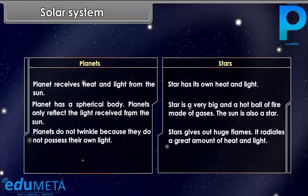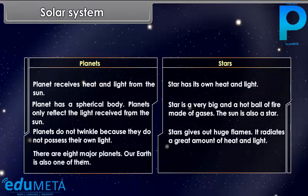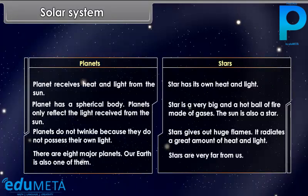Stars give out huge flames and radiate a great amount of heat and light. A star is a very big and hot ball of fire made of gases. The sun is also a star. There are eight major planets, and our Earth is also one of them. Stars are very far from us.